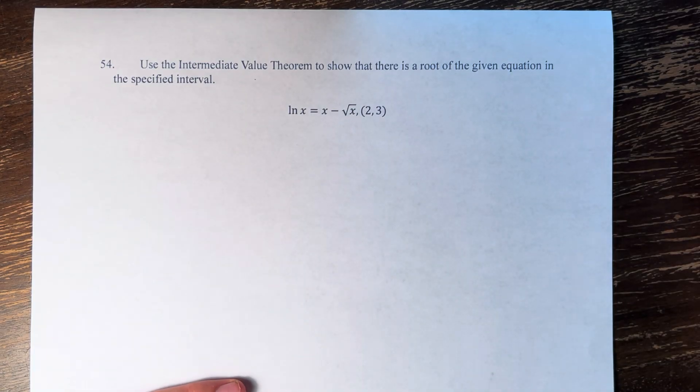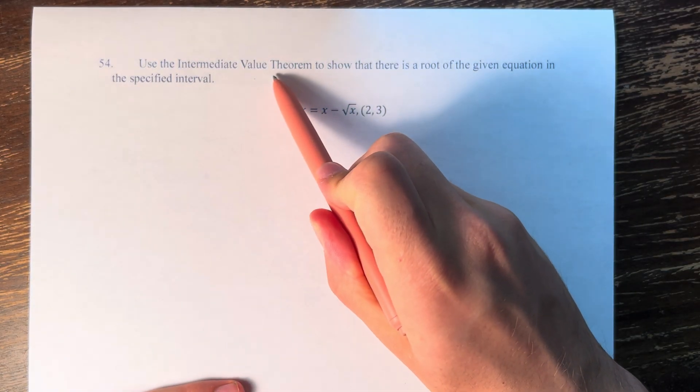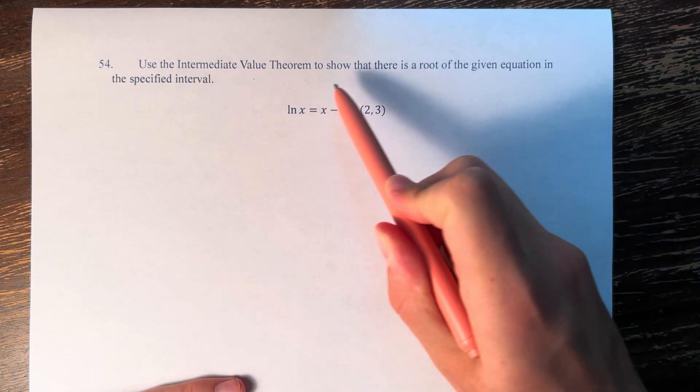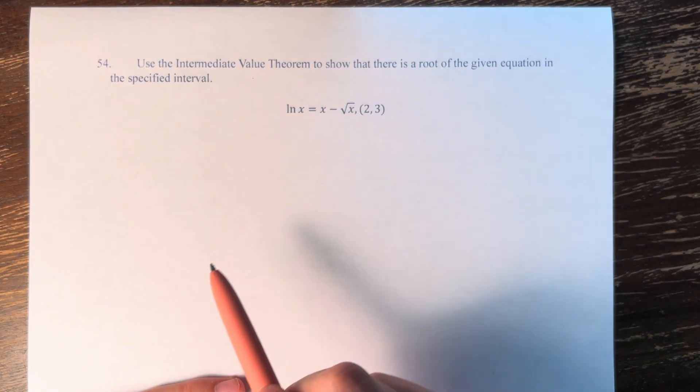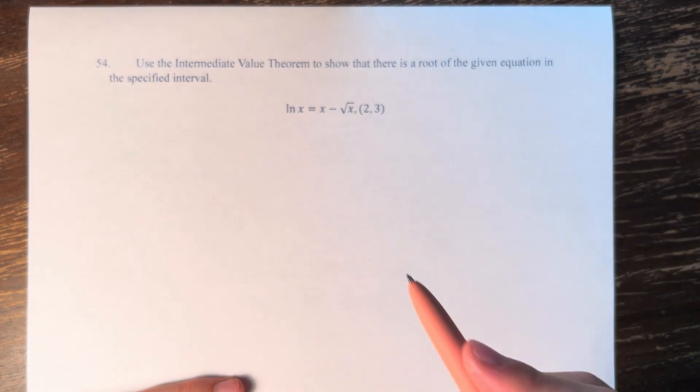Hello and welcome back to another video. In this problem, we're asked to use the Intermediate Value Theorem to show that there's a root of the given equation in the specified interval. We have ln x = x - √x, and the interval is from 2 to 3.